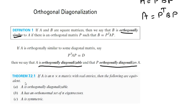If we can find an orthogonal matrix P such that P inverse AP equals D, a diagonal matrix, then we say that the matrix A is orthogonally diagonalizable and the matrix P orthogonally diagonalizes A. There is a theorem: if A is an n by n matrix with real entries, then the following are equivalent — A is orthogonally diagonalizable, A has an orthogonal set of n eigenvectors, and A is symmetric.